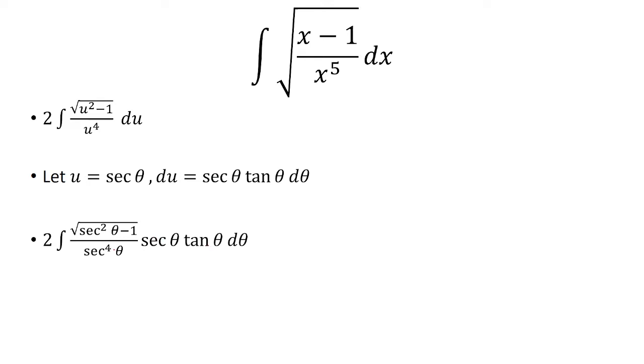Now the secant and the secant to the 4th, we'll just have secant cubed in the denominator. And we know that 1 plus tangent squared is equal to secant squared. So that means that secant squared minus 1 is equal to tangent squared. So we'll replace the square root, the inside of the square root, with tangent squared. The square root of tangent squared is tangent. Multiply that by tangent outside. That gives us tangent squared. That's going to be all over secant cubed.